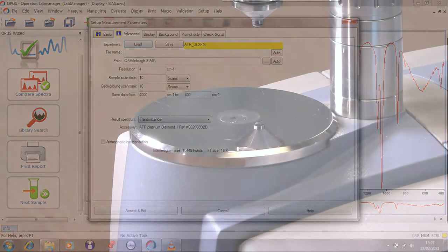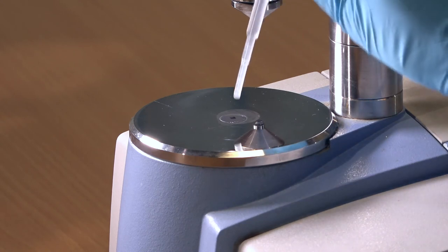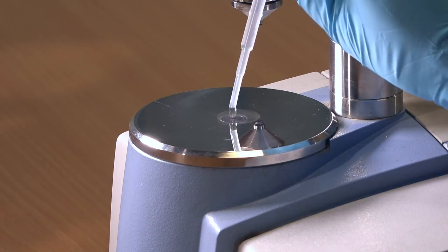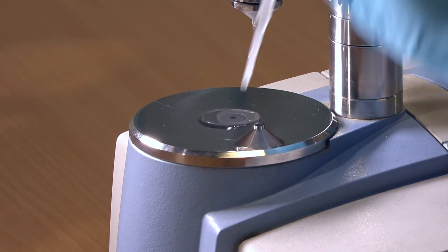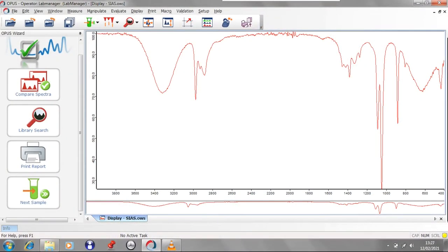Extra care must be taken with volatile samples as they may start evaporating during the sample measurement, which will result in a poor spectrum. To overcome this, you can reduce the number of scans, which will reduce the sample measurement time but will result in lower quality spectra. Or preferably, add more sample during the running of the measurement. This may need to be done continuously for very volatile samples or halfway through for less volatile samples.